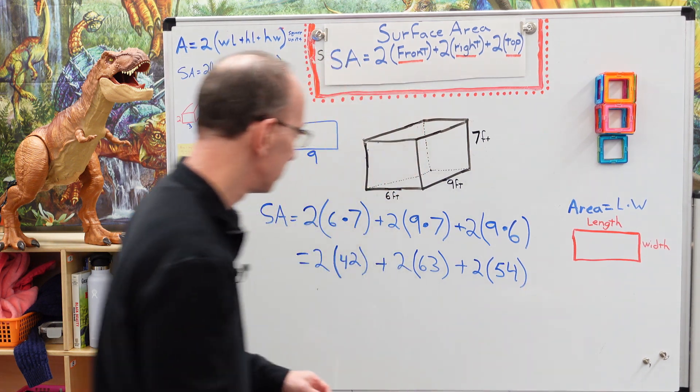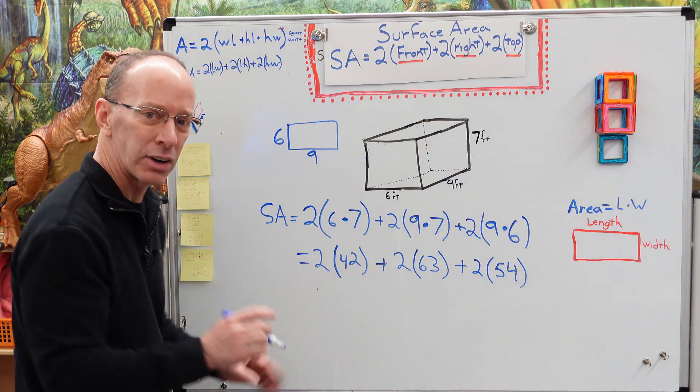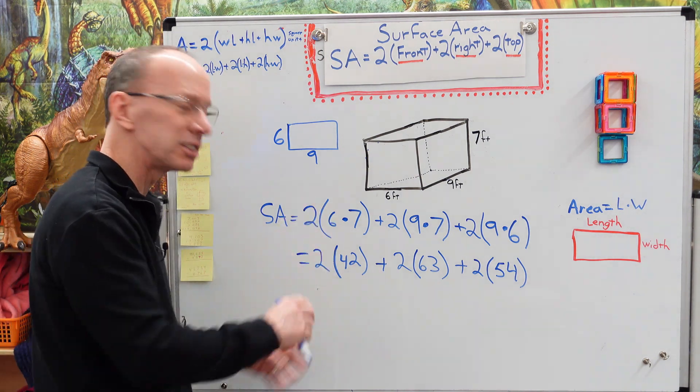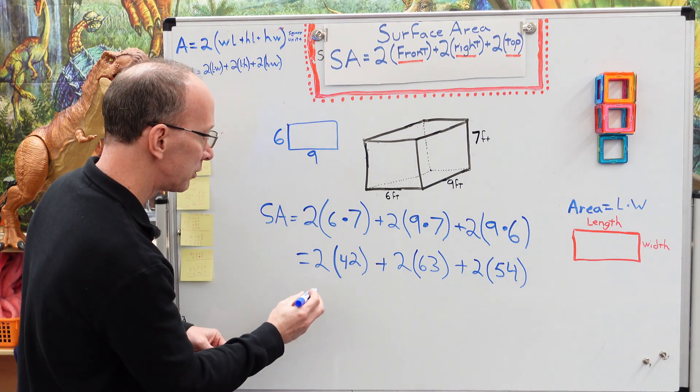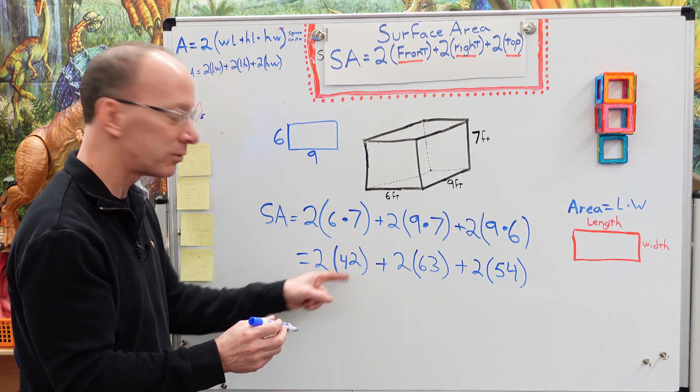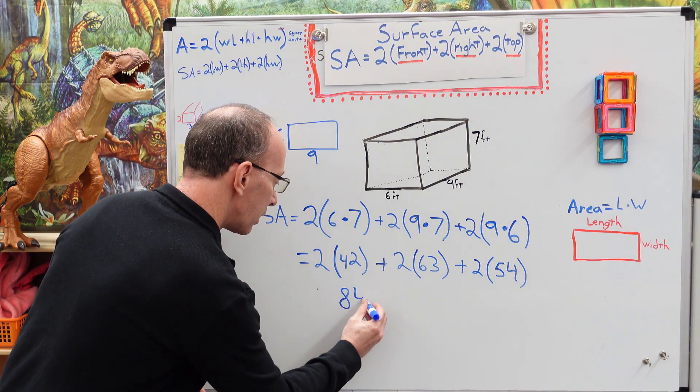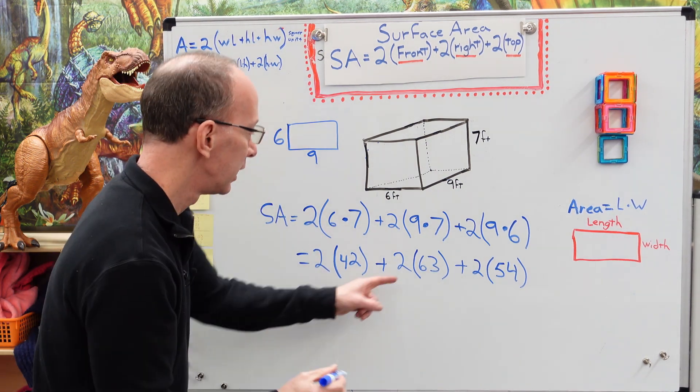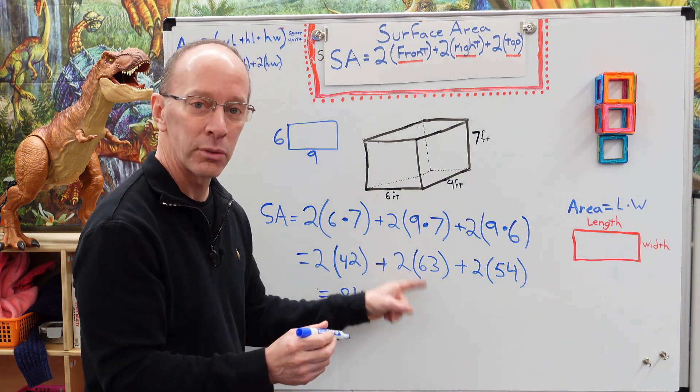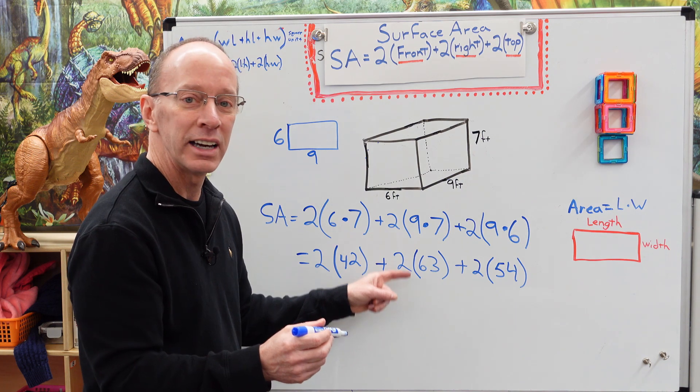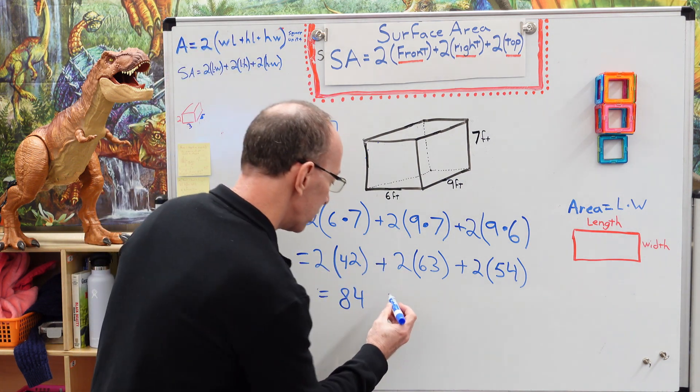All right, now we have to go ahead and multiply these. So I'm going to go ahead and try not to use a calculator. I always just do it longhand. All right, so we got two times 42. So 42 and 42 would be 84. Go ahead and put my equal sign here. 63 and 63. What is that? Well, you know that three plus three is six and six plus six would be 12. So it would be one, two, six. 126.